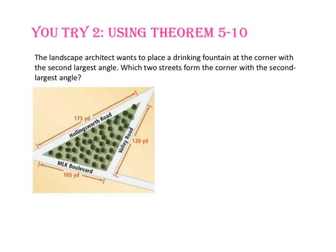Pause the video and do you-try number 2. The landscape architect also wants to place a drinking fountain at the corner with the second largest angle. Which two streets form the corner with the second largest angle? The second largest angle is opposite the second longest side. Since Valley Road is 120 yards — shorter than Hollingsworth Road but longer than MLK Boulevard — the angle formed by MLK Boulevard and Hollingsworth Road will be the second largest angle.